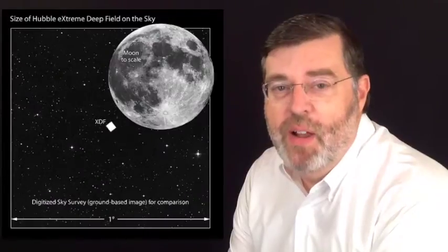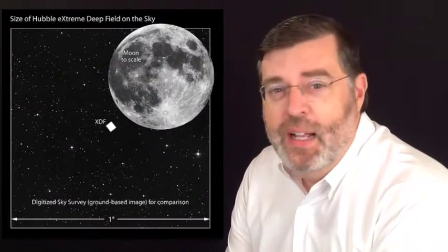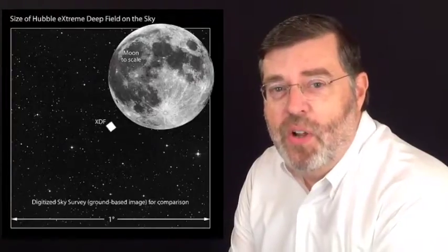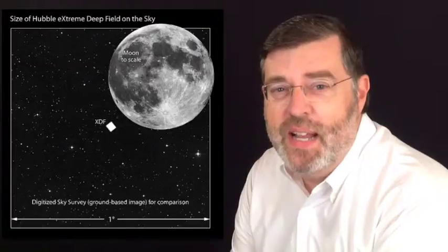If you look at the picture beside me right now, you see that tiny little white square there - that's the area of the sky we're talking about. Notice the moon is superimposed there to show you this very tiny little piece.